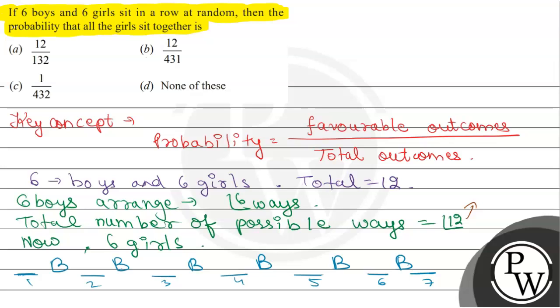And this final answer we can see doesn't match option A or B, so our option D is our correct answer, which is none of these. I hope the concept is clear, thank you.